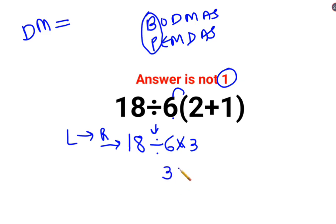So 18 divided by 6 is 3, multiplied by 3. The answer for this question is 9. I hope this is very clear to everyone. That's it for today, I will see you in the next video.